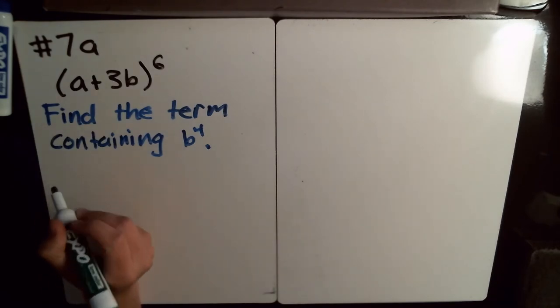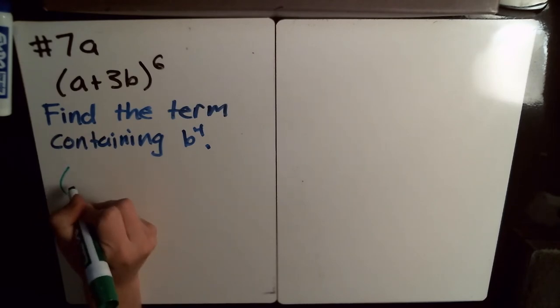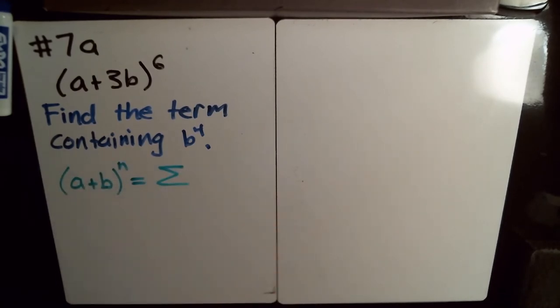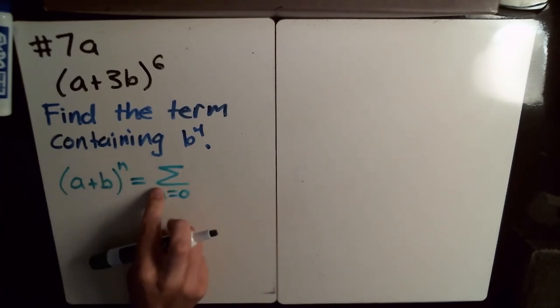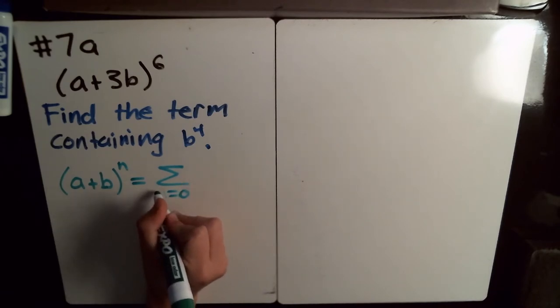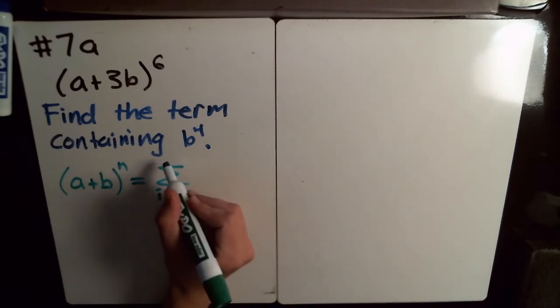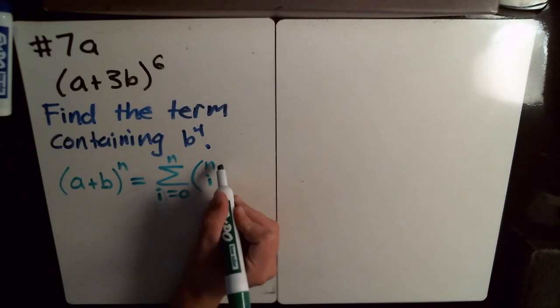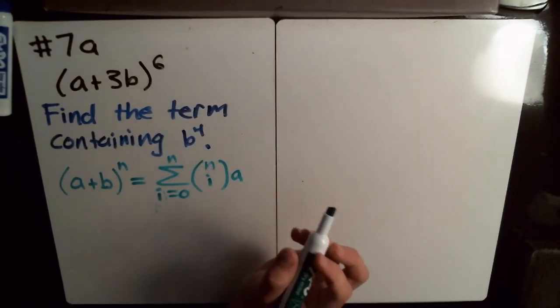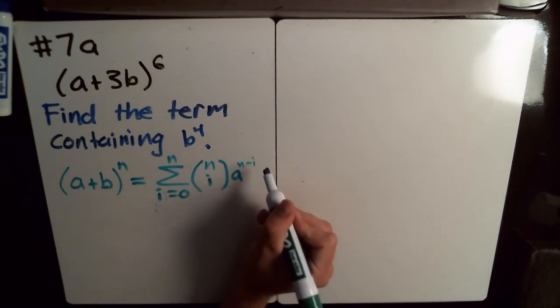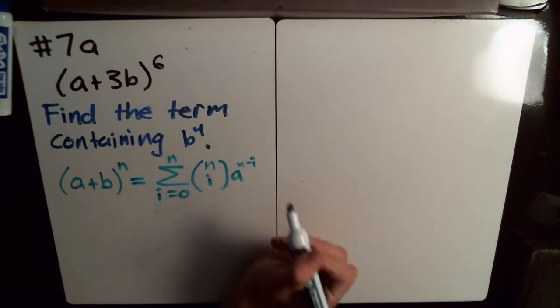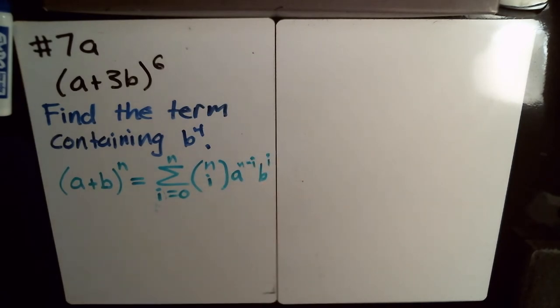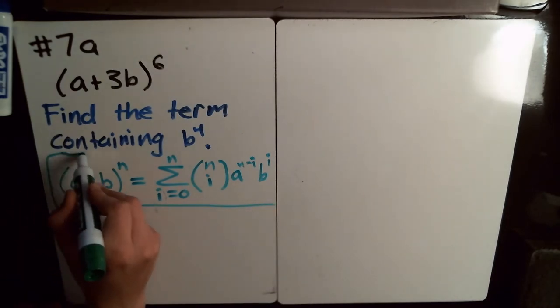And so the binomial theorem says that in our case, generally as it's stated on your formula sheet, is a plus b to the n power is the sum from i equals 0 to n of this binomial coefficient, n choose i, and it's a to the n minus i because as we go along in our sum, we're decreasing the power on a and then increasing the power on b. So this is the statement of the binomial theorem.